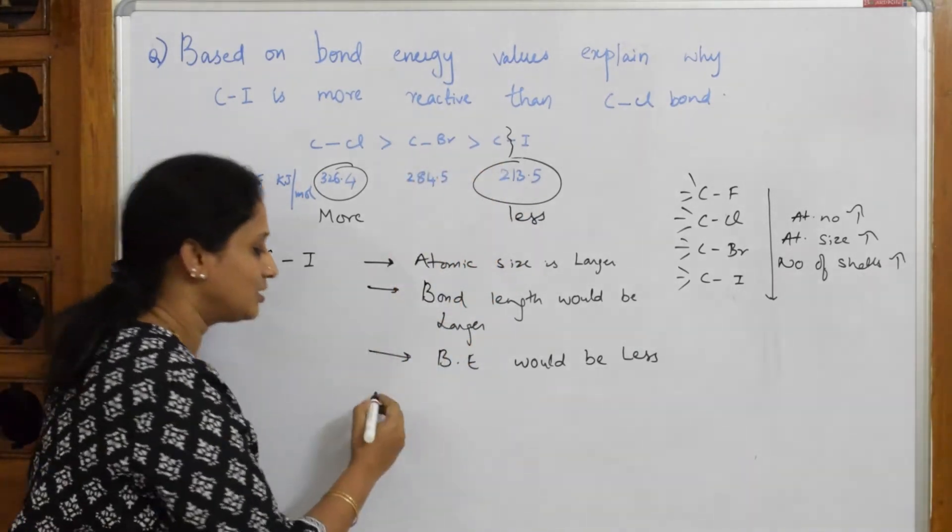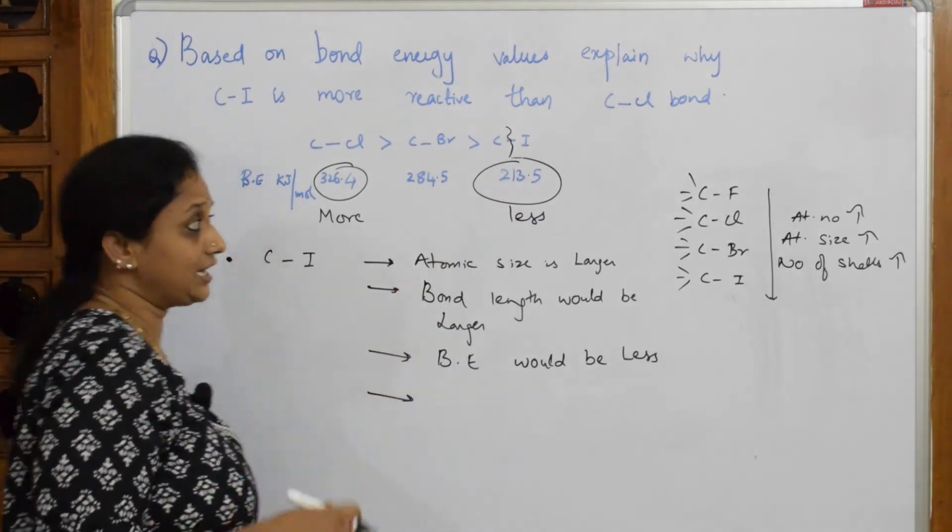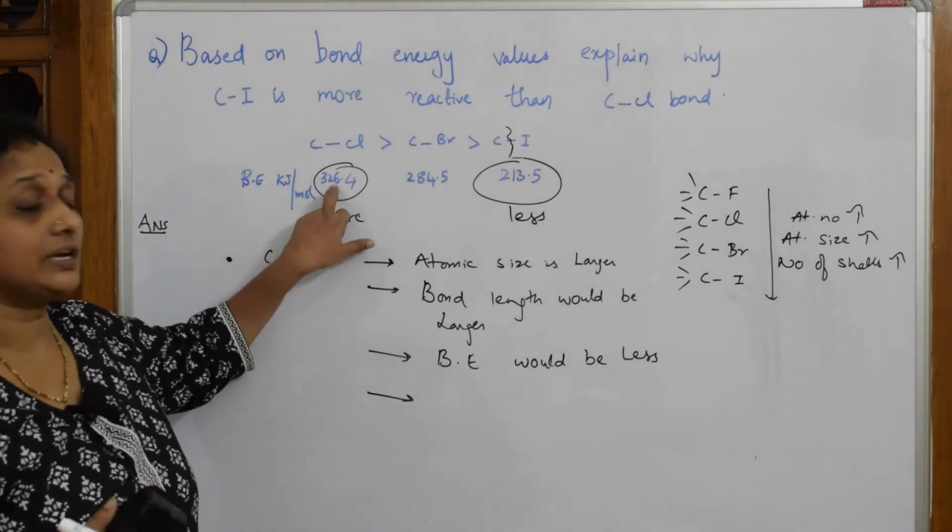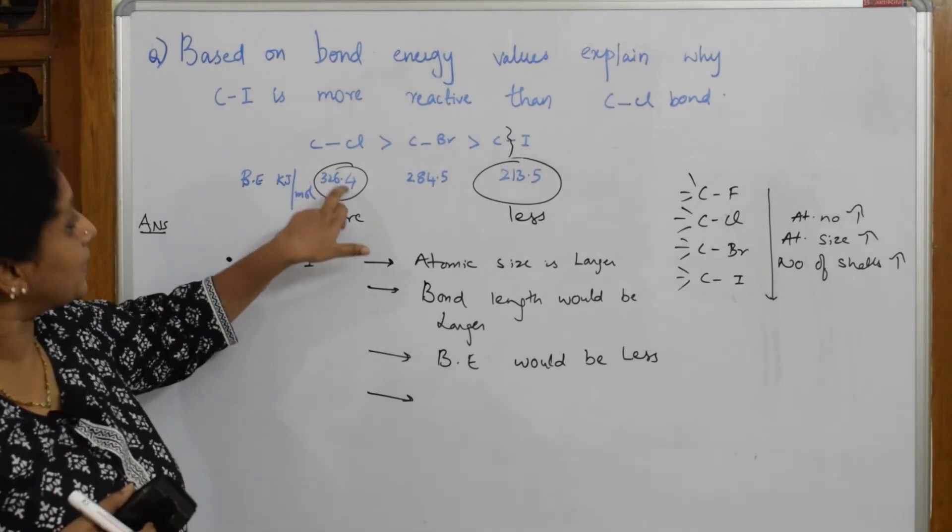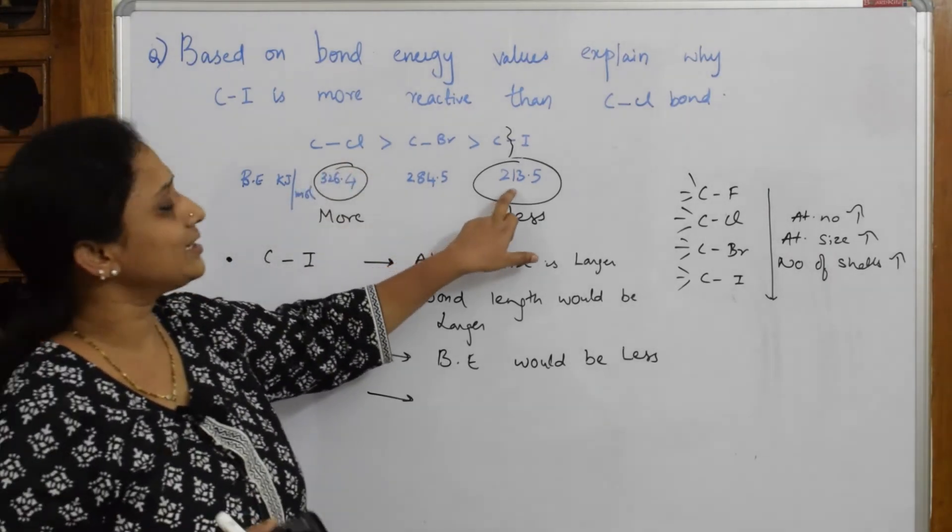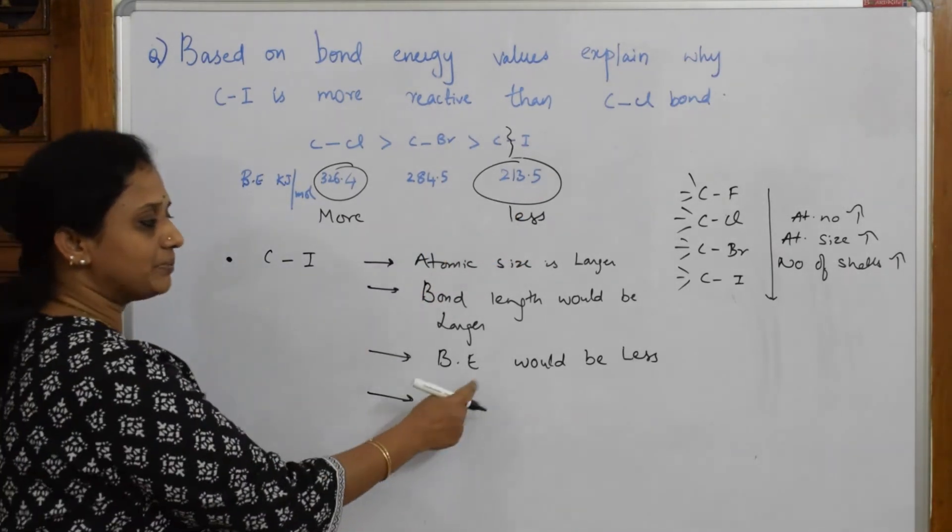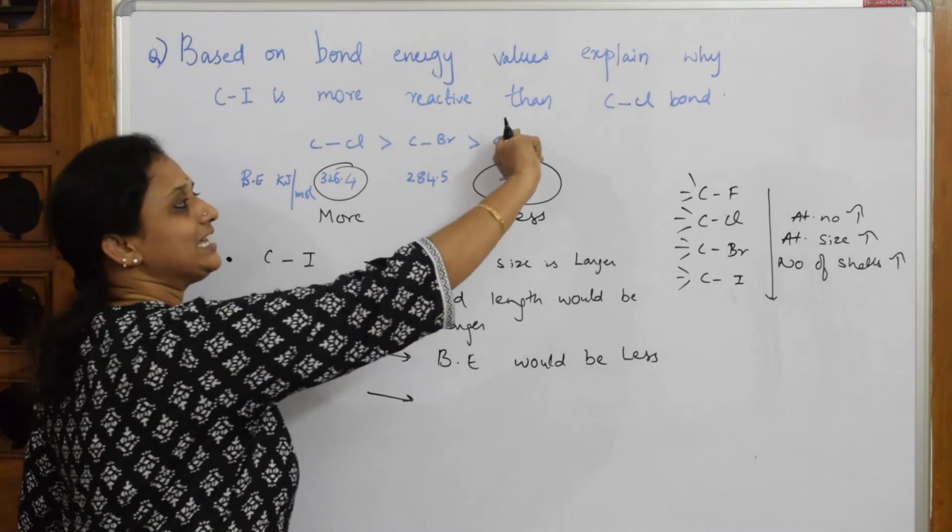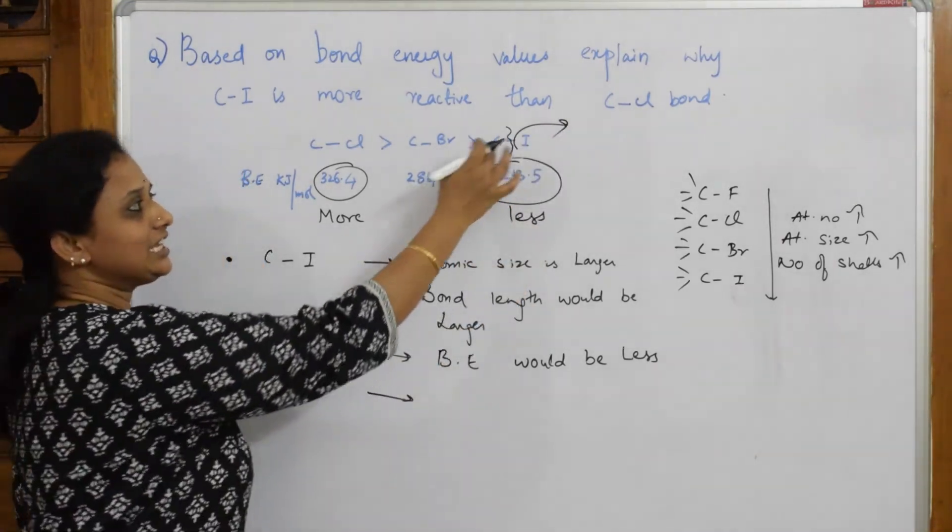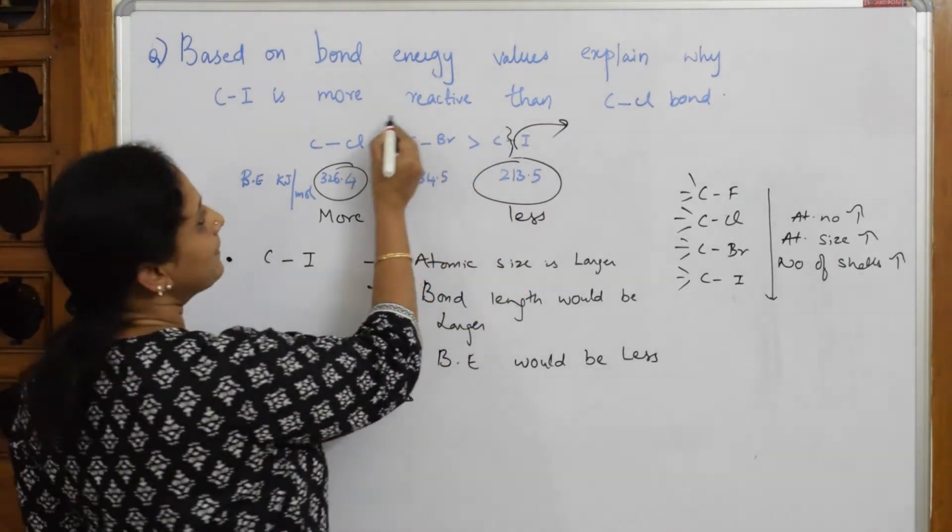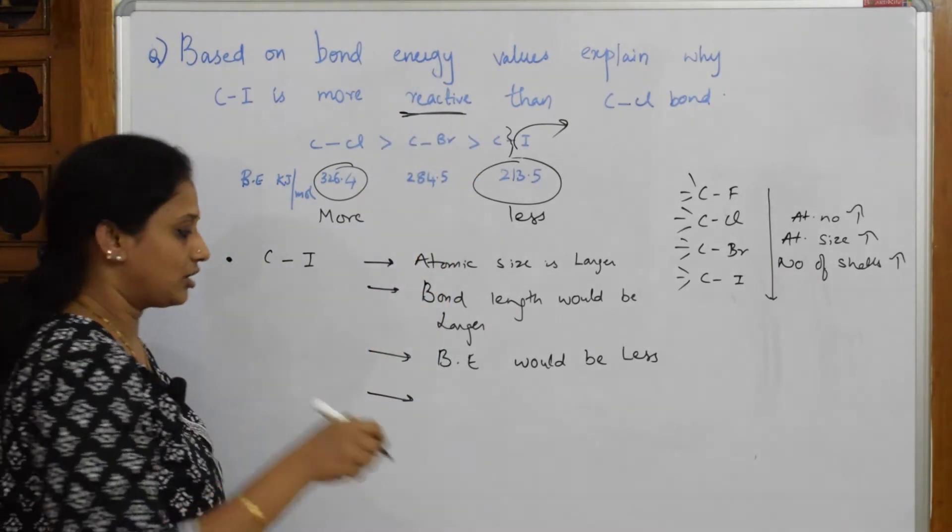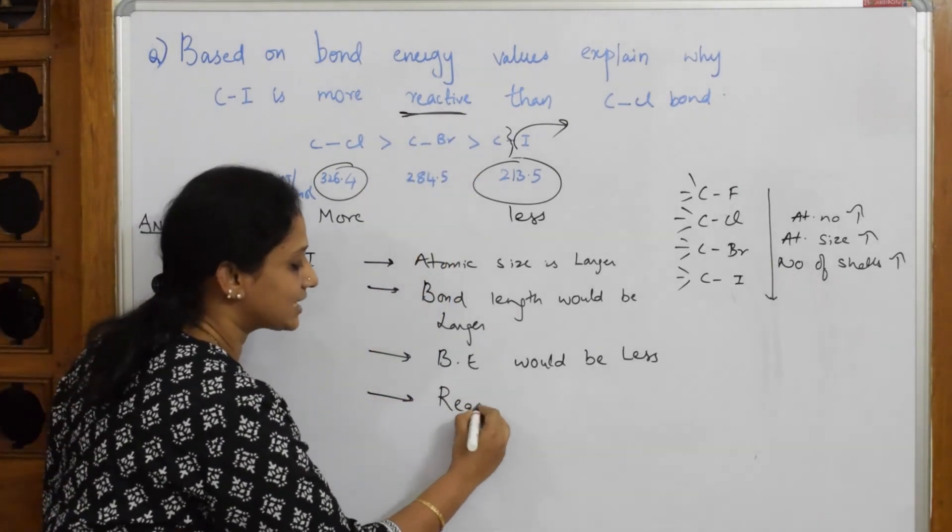When the bond enthalpy or bond energy is very less, I've used less energy to break this bond. What will happen to the reactivity? Here I have to use 326.4 kilojoules per mole to break this. Here I can use 213.5 kilojoules per mole to break this. So when bond energy would be less, I can easily pull out this iodine. When I can easily pull out this iodine, what will happen to the reactivity?